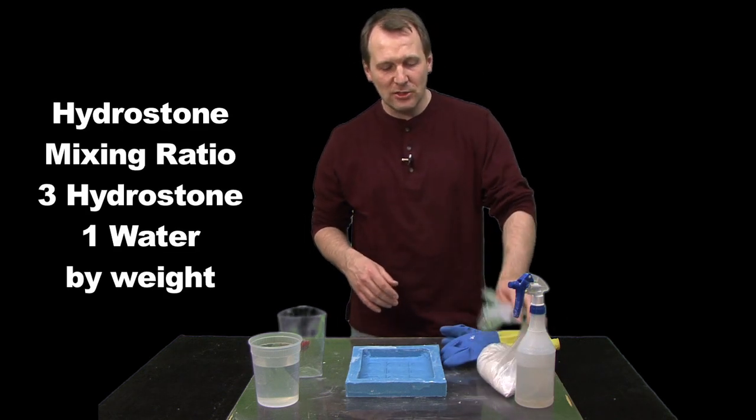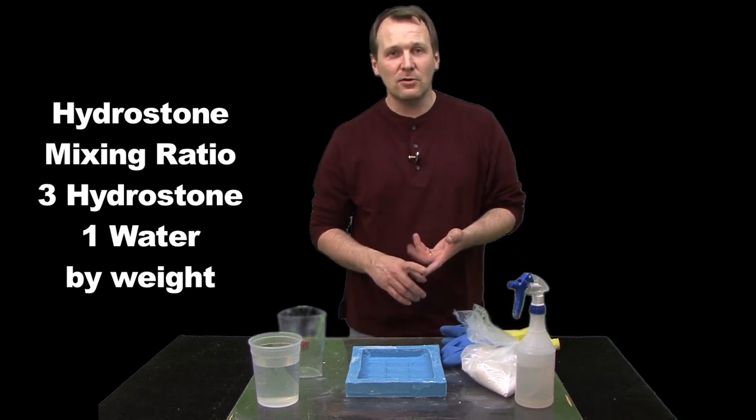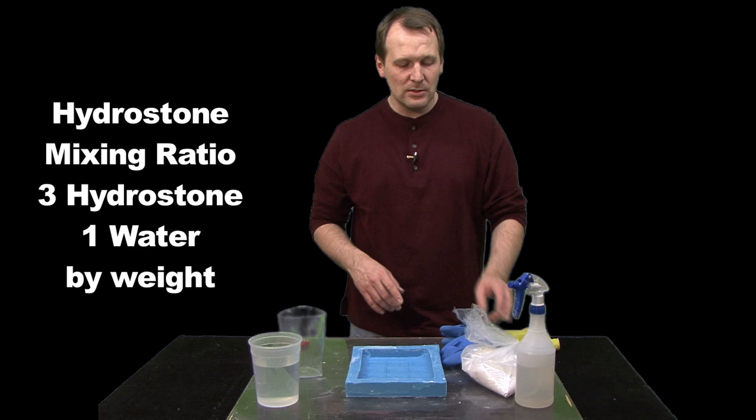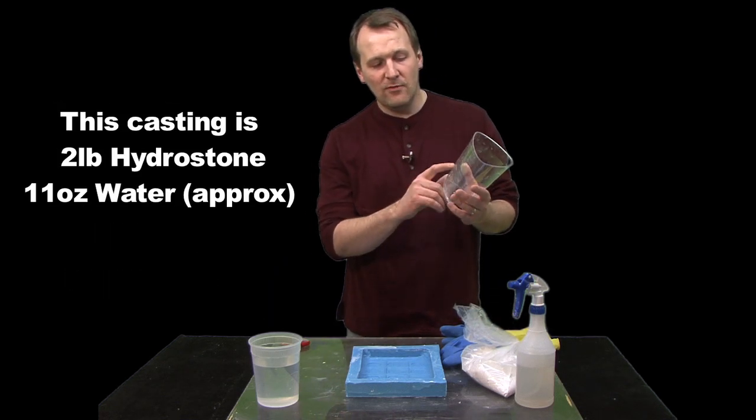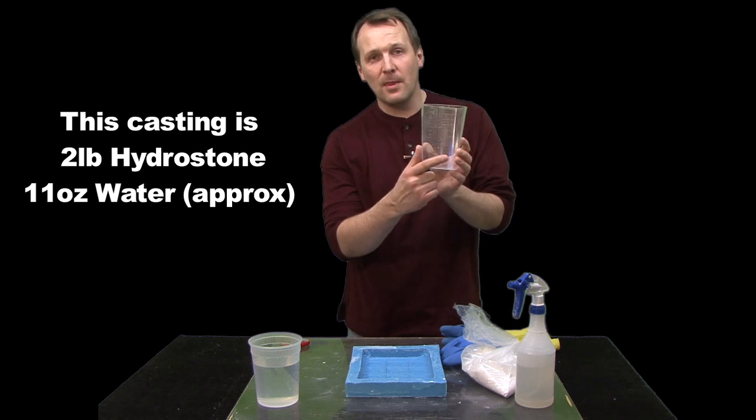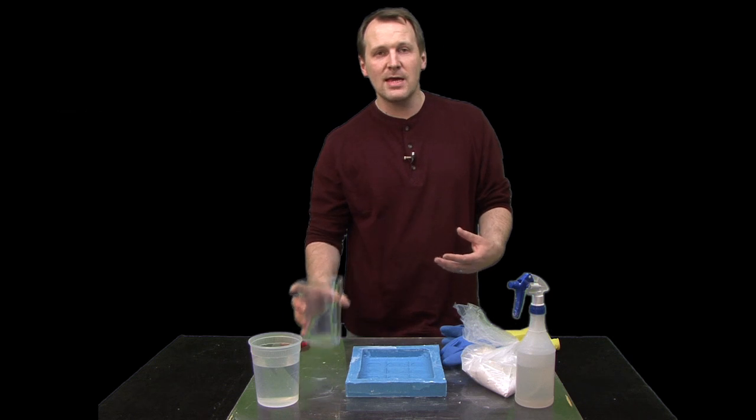The mixing ratio for hydrostone is three parts hydrostone to one part water, and so I've got 11 ounces here marked on my beaker so that I have it so I don't have to weigh when it comes time to actually casting.